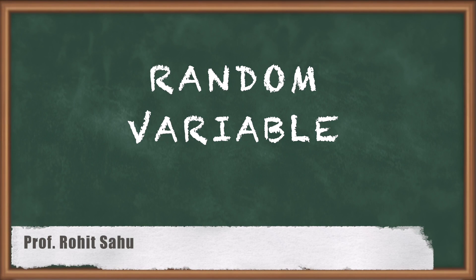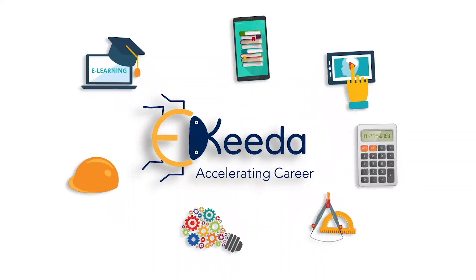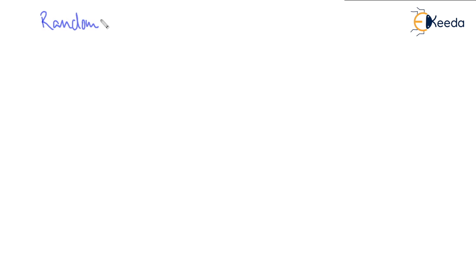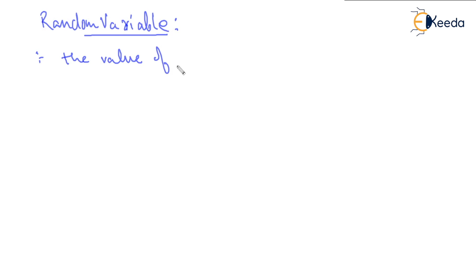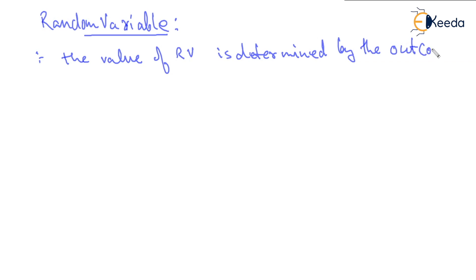Hello everyone. In this session we will discuss random variable. We are moving into the distribution or the statistics part where we will start with random variable. In terms of definition, the value of random variable — I will be writing in short RV — the value of RV is determined by the outcomes of the experiment.